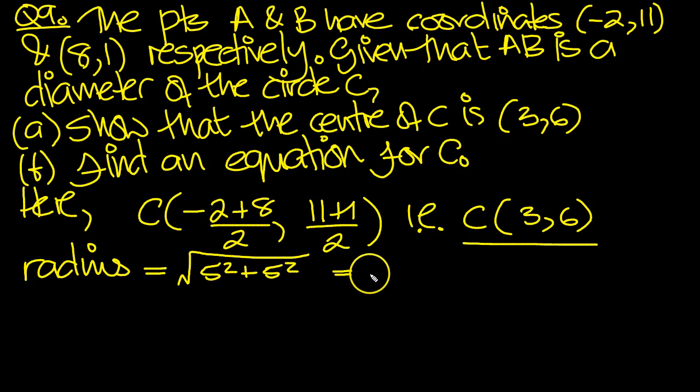So it's root 50, which is 5 root 2, because it's 25 times 2. The square root of 25 is 5, so it's 5 lots of root 2, so there's our radius.